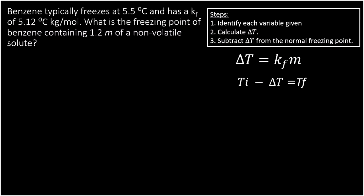Let's work some practice examples. Benzene, which is an organic solvent, typically freezes at 5.5 degrees Celsius and has a KF of 5.12 degrees Celsius kilograms per mole. Those units make the equation work out — when you multiply concentration in molality by the freezing point constant, you get out degrees Celsius. The question asks: what is the freezing point of benzene with a concentration of 1.2 molality of a non-volatile solute?